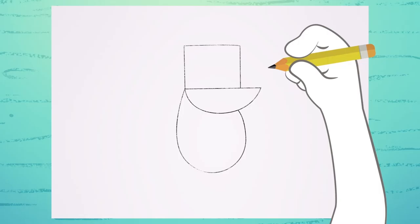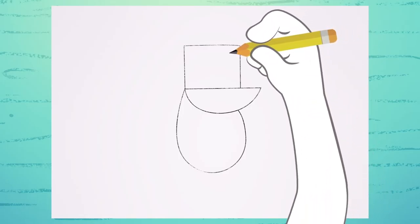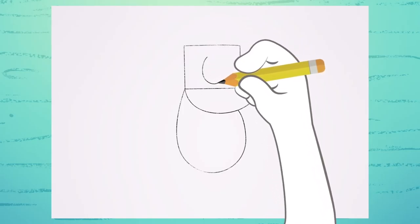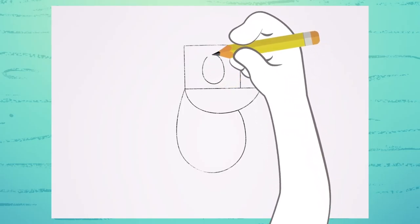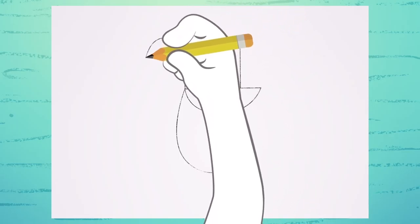Now, connect this dot to this one, making a curve. Still doesn't look like a koala, right?